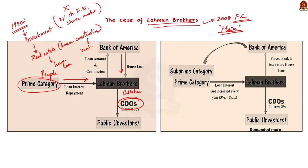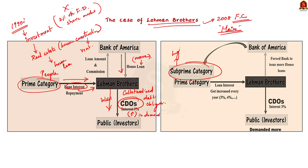The mechanism worked like this: people who bought houses paid interest to Lehman Brothers, and Lehman Brothers paid interest to the CDO holders. The demand for CDOs rose in the market, but Lehman Brothers did not have enough CDOs, so they pushed banks to lend more housing loans. Banks started giving out loans to the subprime category — borrowers who can easily default on their loans, making it very risky. Over the years, these subprime borrowers defaulted, so Lehman Brothers could not pay investors the 3% interest. On September 15, 2008, they filed bankruptcy, many investors lost their money, and this triggered the 2008 financial crisis that affected many countries globally.